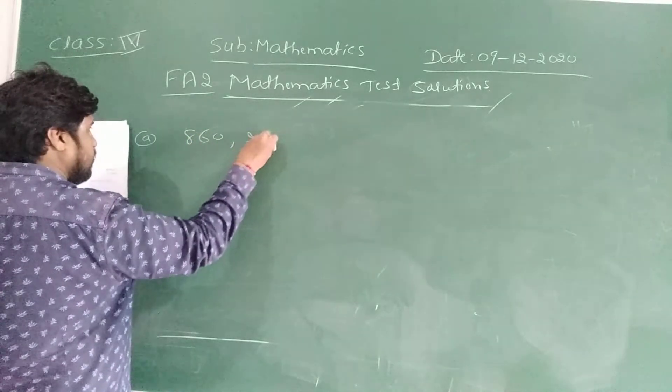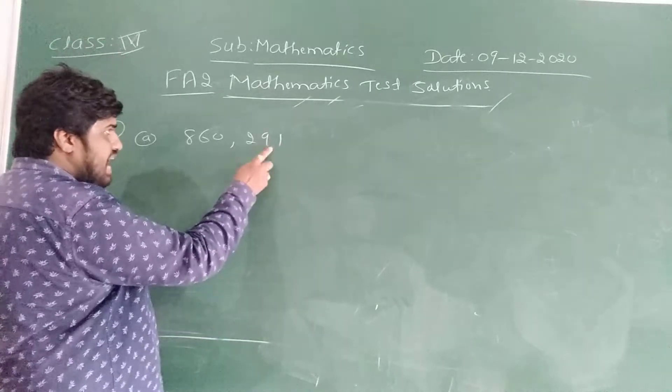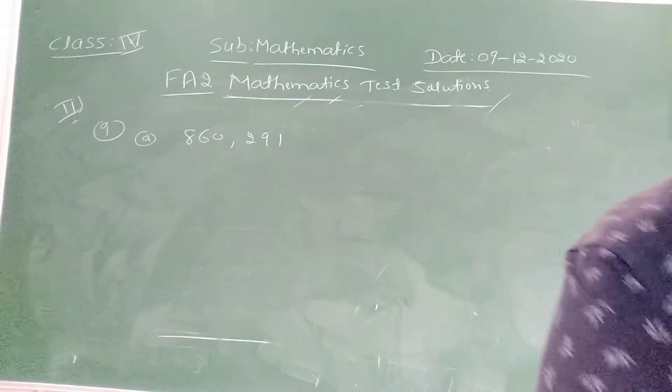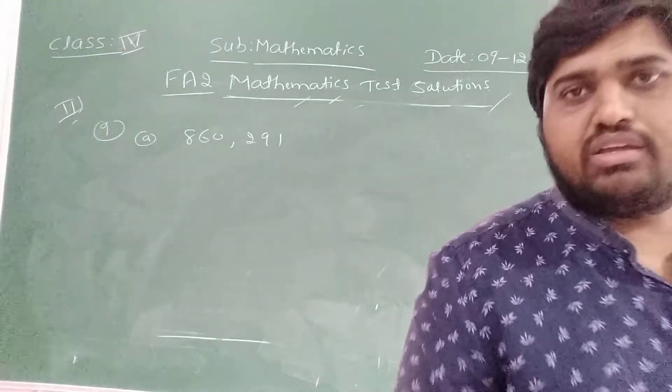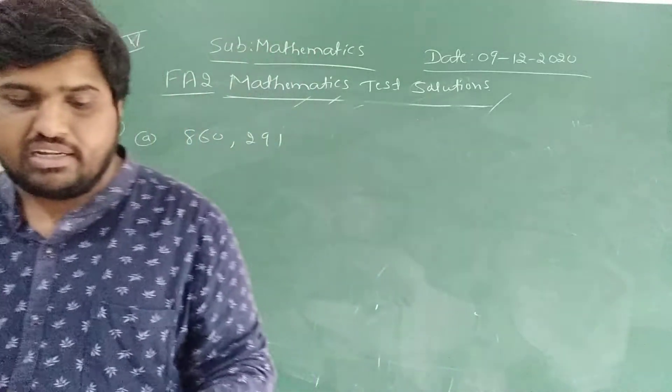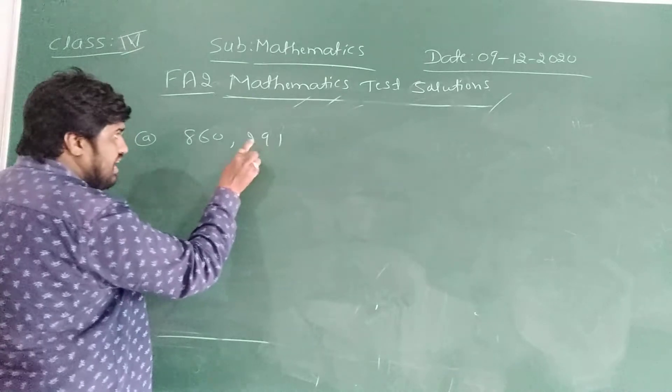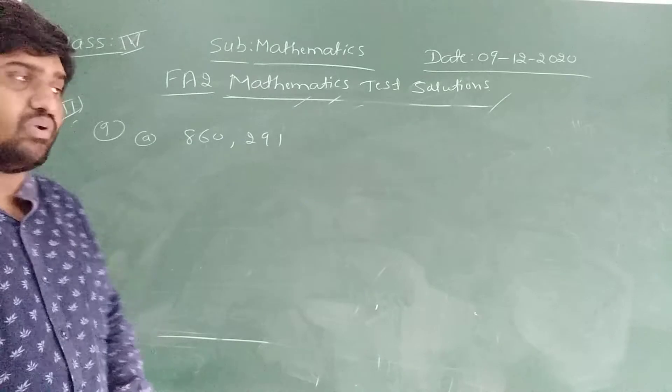860 comma 291. In international system of numeration, okay unit, 10, hundred, then afterwards children see I give them this one. In international system of how to write, that is unit, 10, hundred, thousand, ten thousand, hundred thousand. How to write the number name?